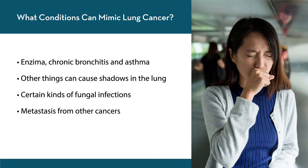What other conditions can mimic lung cancer? Things like emphysema, chronic bronchitis, or asthma can certainly mimic symptoms of lung cancer. Other things can cause shadows in the lung — for example, a tuberculosis lesion can appear much like a lung cancer, and certain kinds of fungal infections can also mimic lung cancer. There can also be metastasis from other cancers; for example, a colon cancer or a prostate cancer might spread to the lung, leading to confusion between a primary lung cancer and a metastasis from another cancer. It's important to tell these apart because the staging and treatment will be completely different.